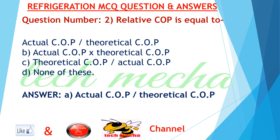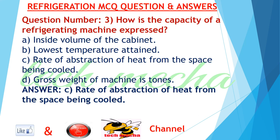Answer: A. actual COP divided by theoretical COP. Question number 3: How is the capacity of a refrigerating machine expressed? A. inside volume of the cabinet, B. lowest temperature attained, C. rate of abstraction of heat from the space being cooled, D. gross weight of machine in tonnes.